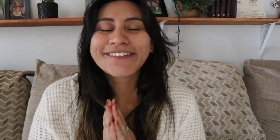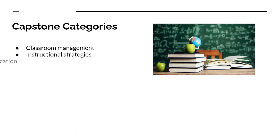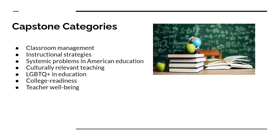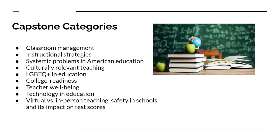Step one: choose five categories related to education. Some examples include classroom management, instructional strategies, systemic problems in American education, culturally relevant teaching or CRT, LGBTQ and education, college readiness, teacher well-being, technology and education, virtual versus in-person teaching, safety in schools and impact on test scores — that might be a good one if you're in the United States — and literacy in high school education. Come up with categories more relevant to your everyday practice.